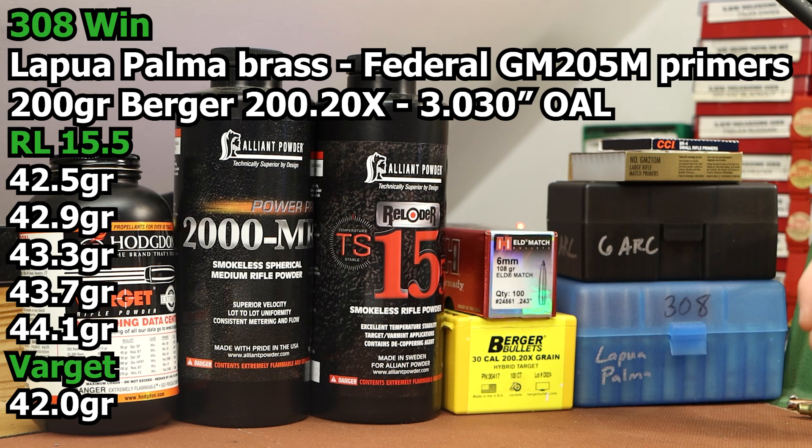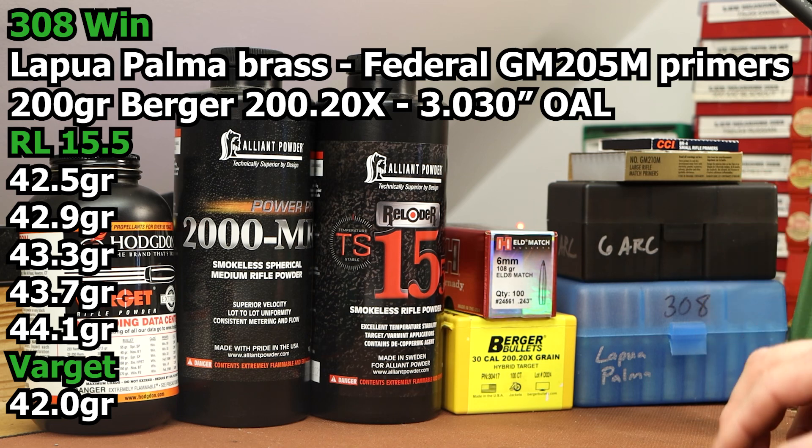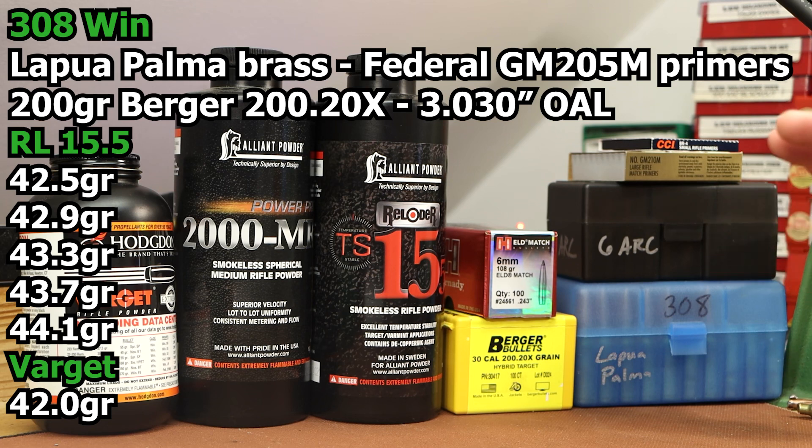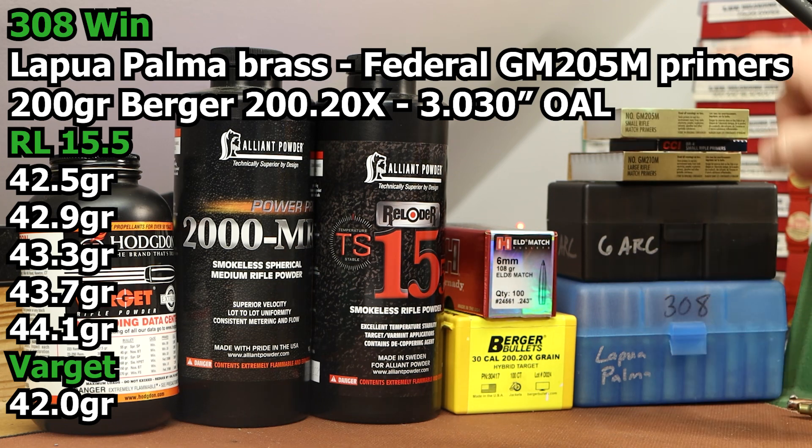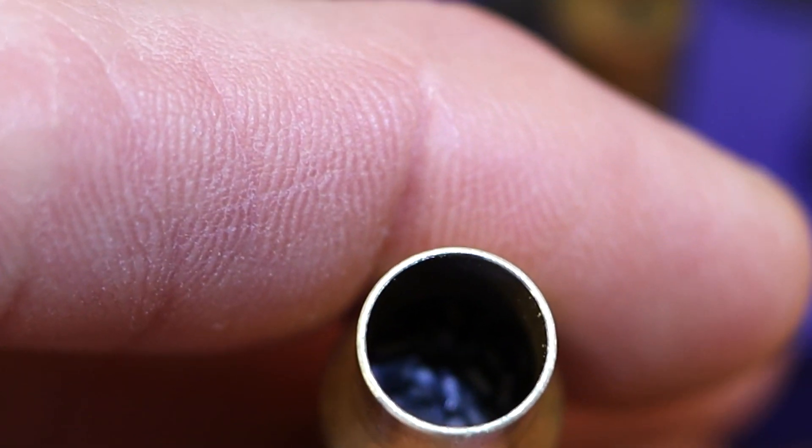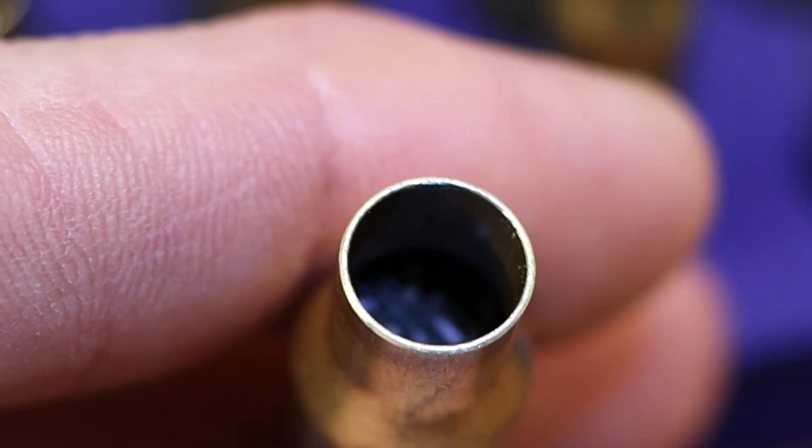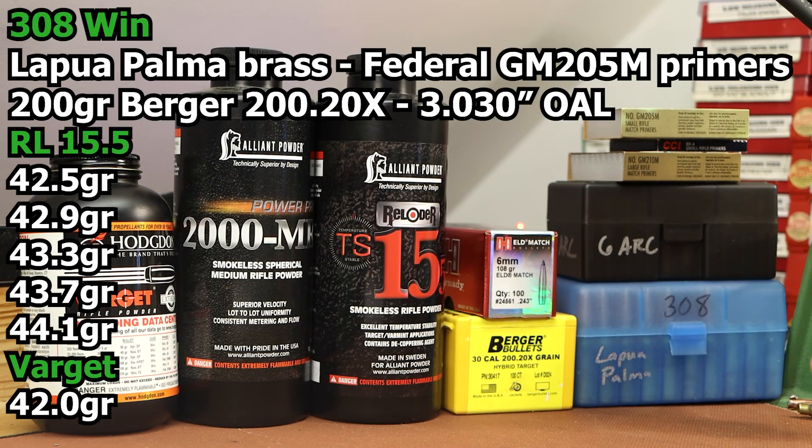I'm going to go by the load data that Alliant provides for the Berger 200 grain hybrid target, which means a max charge of 44.1 grains. I'm a little bit nervous because Alliant also has data for the 200 grain Sierra Match King and they show a max charge of 42.9. We're going to start at 42.5 and work our way up to 44.1 in four-tenths of a grain increments. It says Lapua Palma brass, GM205M primers. Case capacity looks fine here.